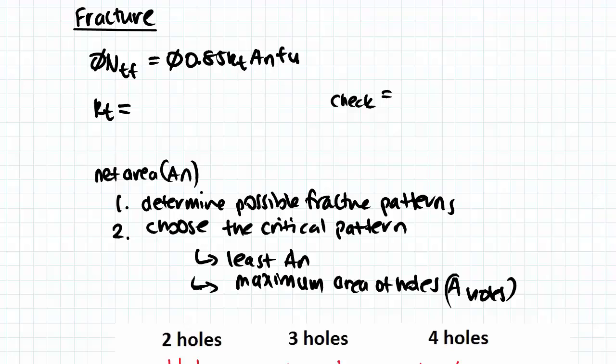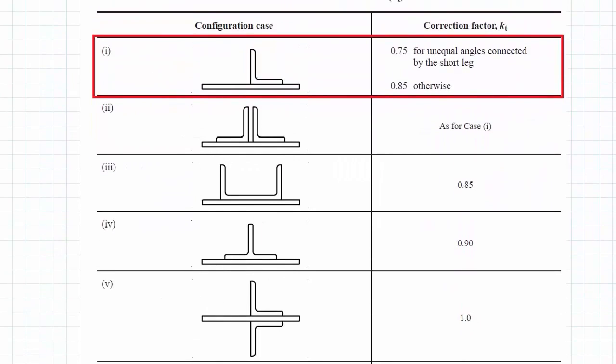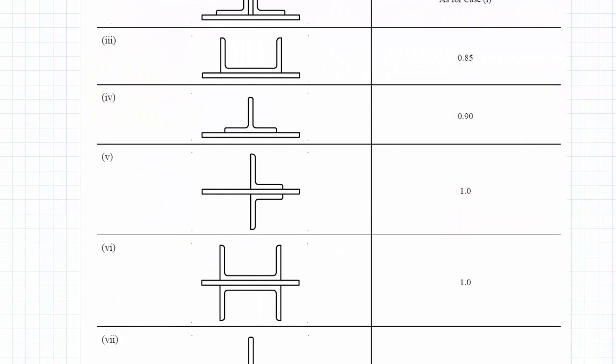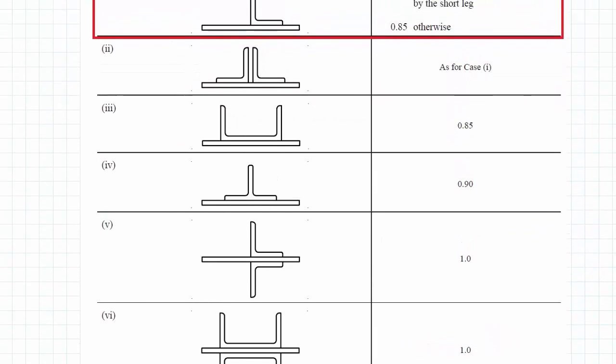Usually when we solve for correction factor, we refer back to table 7.3.2. But as you'll see, none of the configurations in the table represents an I-beam connected in both its flanges.